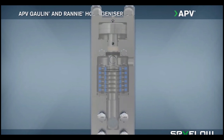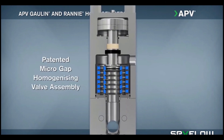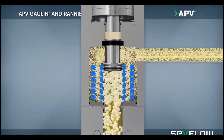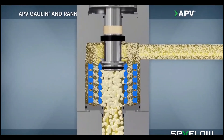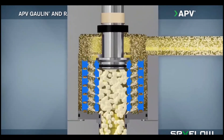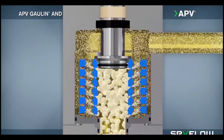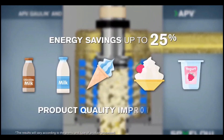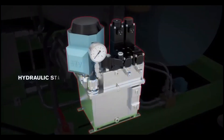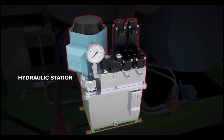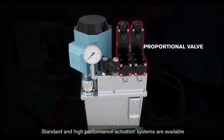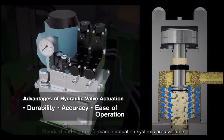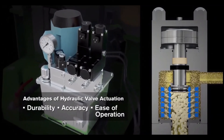Compared to conventional designs, their patented micro gap valve assembly requires less operating pressure to achieve the desired particle size, delivering increased product stability while saving energy and reducing maintenance costs. The micro gap technology has been proven to reduce energy costs by up to 25%. SPX Flow's hydraulic valve actuation technology determines homogenization pressures. Their valves are known for durability, accuracy, and ease of operation, and are in use in thousands of processing systems worldwide.